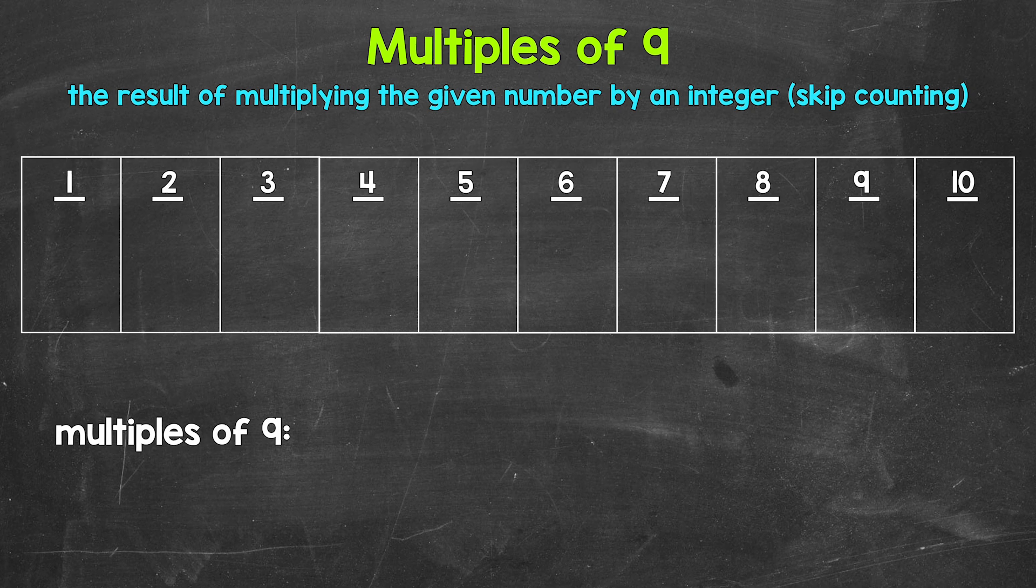So looking at the multiples of 9, let's start with 1 times 9. That gives us 9. 9 is the first multiple of 9. Then we have 2 times 9, that's 18. 18 is the second multiple of 9. 3 times 9 is 27. 4 times 9 is 36. 5 times 9 is 45.